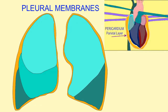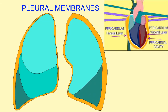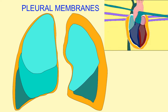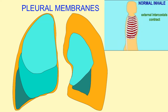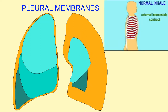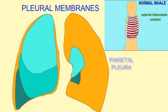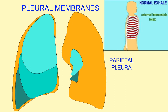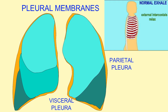Just as the serous membrane known as the pericardium lines the heart with its outer parietal layer and a visceral layer which is the surface of the heart, the lungs are lined by pleural membranes — serous membranes which also have two layers. The parietal pleura line the body cavity while the visceral pleura are the surface of the lungs.